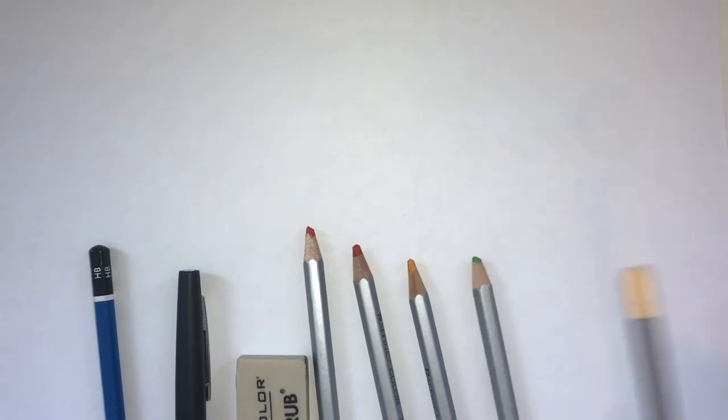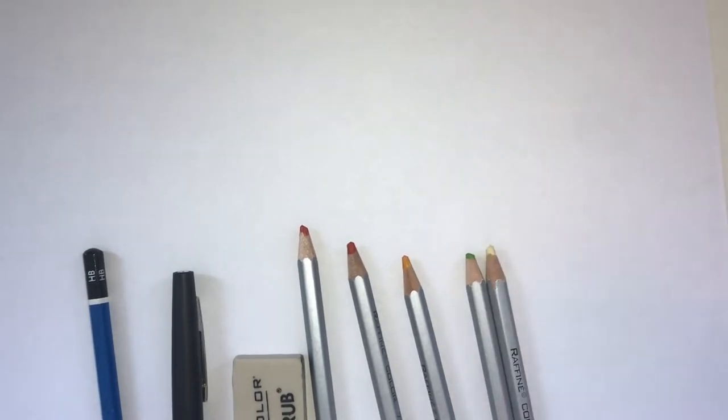To start off with, you'll need a pencil, a black felt-tip pen, an eraser, a red, orange, yellow, green, and peach colored pencils.